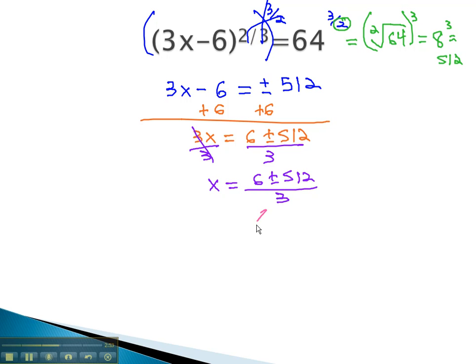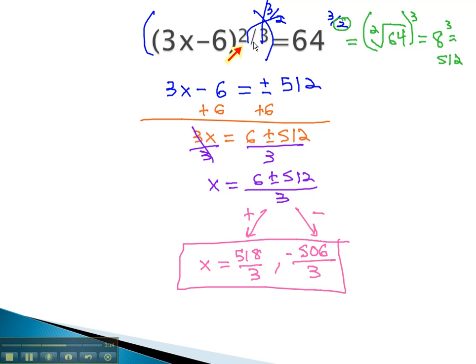X is equal to 6 plus or minus 512 over 3, and then we just have to consider our two answers. One from the plus, one from the minus. 6 plus 512 is 518 over 3, and 6 minus 512 is negative 506 over 3. And we have our two solutions, because we had an even exponent, which we cleared with an even root.